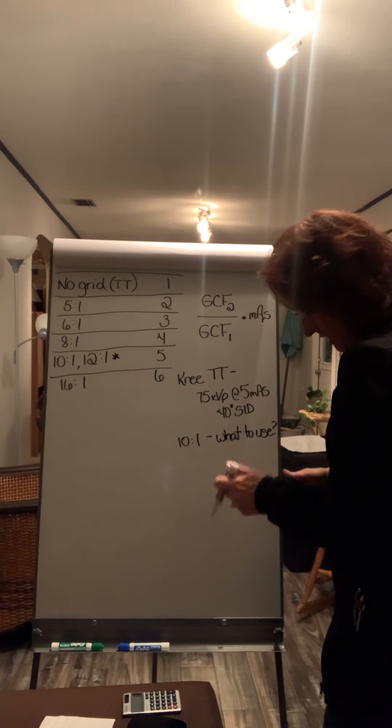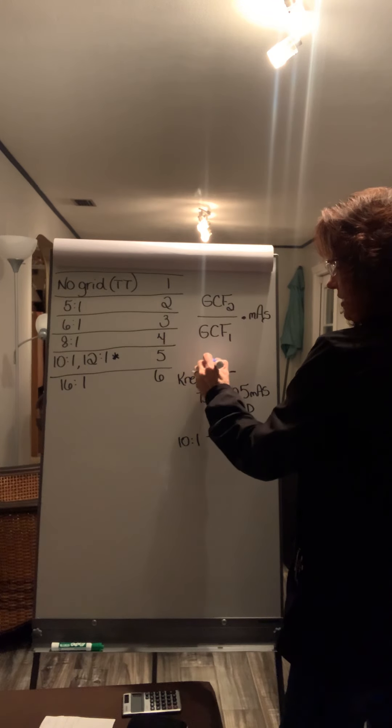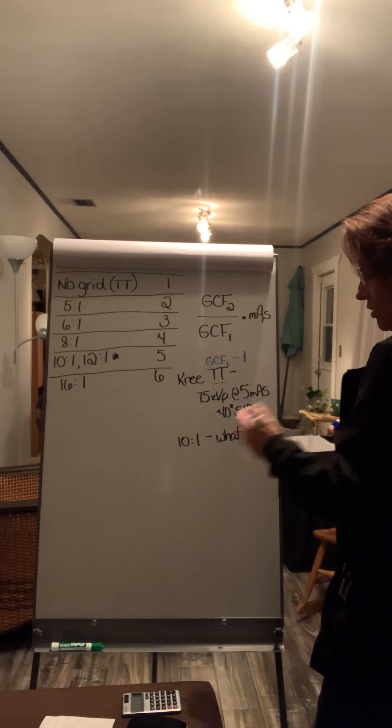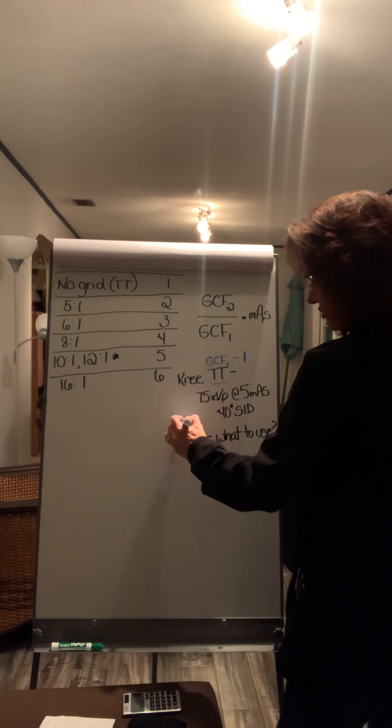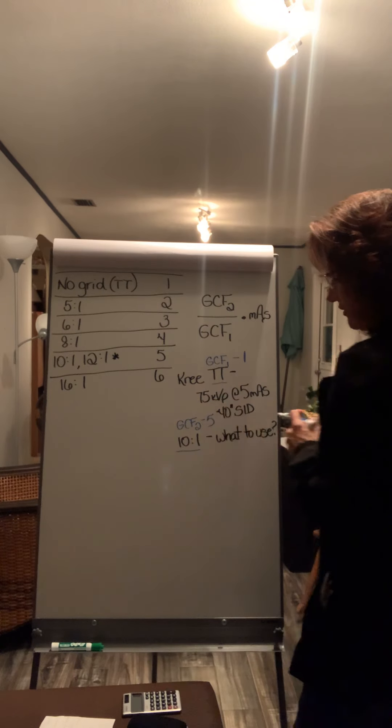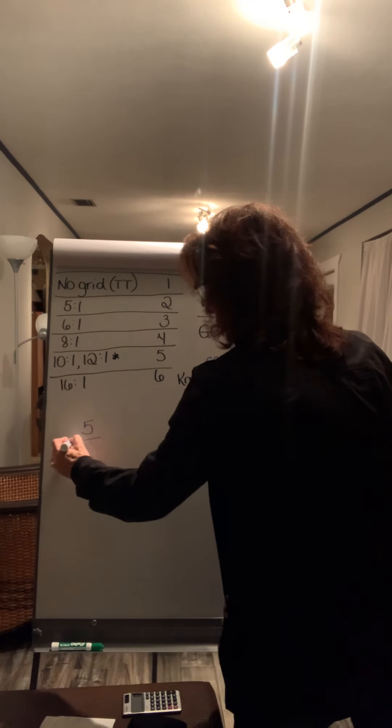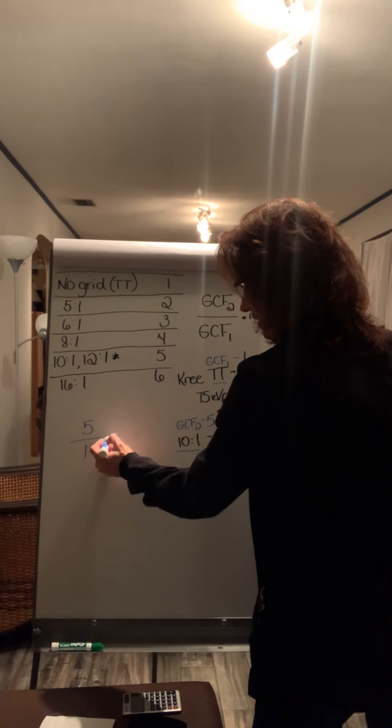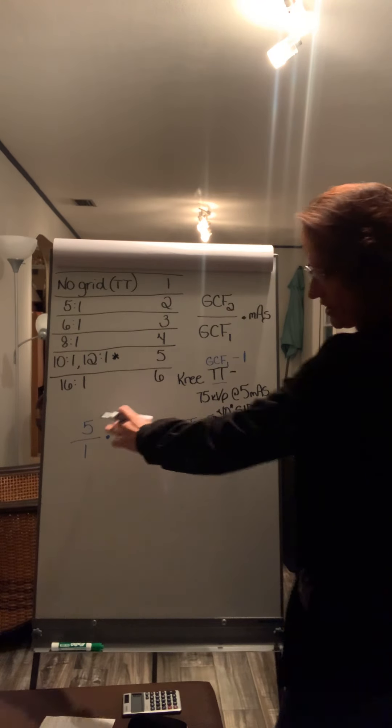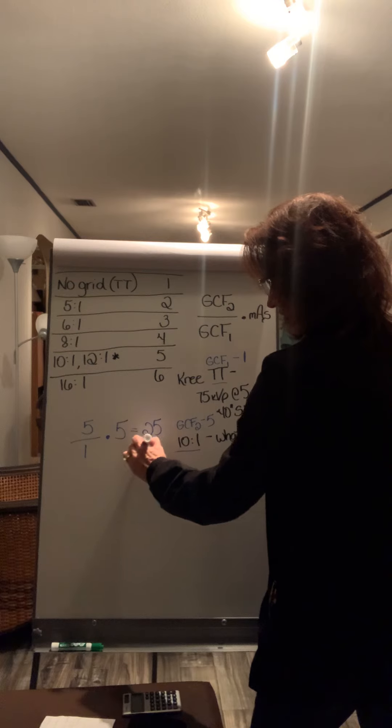So tabletop, if you did it tabletop, that is your first grid conversion factor. That would be your GCF one and tabletop gets a value of one. When you do it in a 10 to 1 grid ratio, that's your second GCF factor. And that gets a value of five. So the formula says your second GCF, which would be five over your first, which is a one times your mAs value, which is five. So five divided by one is five times five would mean that when you put it in the bucky, you would use 25 mAs.